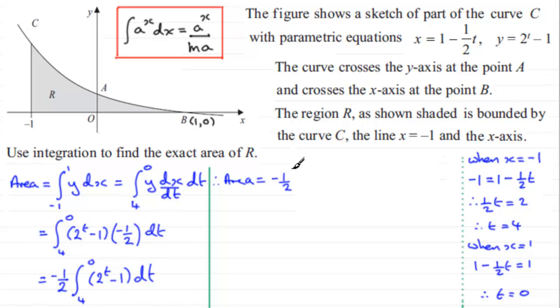We can apply it to this particular integral because when we integrate two to the power t, it is going to be two to the power t divided then by the natural log of two. Then we've got to integrate minus one with respect to t; that's going to be minus t. And we're integrating this between the limits of four and zero.